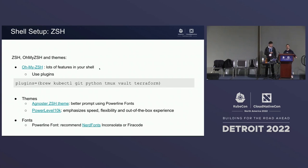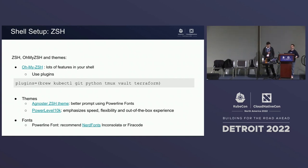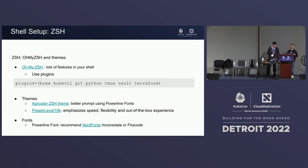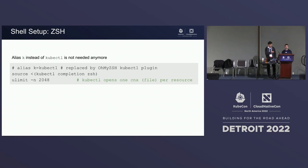The PowerLevel10K theme is a beast — it adds a lot of features we're going to demo in a moment. For it to work best, you need a specific font called Powerline or Power Fonts, which is a font with very specific design. When you use it to define the prompt in your shell, it's going to be way easier to read.